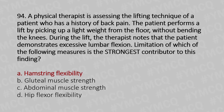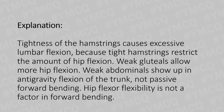Tightness of the hamstring causes excessive lumbar flexion because tight hamstrings restrict the amount of hip flexion. Weak gluteals allow more hip flexion. Weak abdominals show up in anti-gravity flexion of the trunk, not passive forward bending. Hip flexor flexibility is not a factor in forward bending.